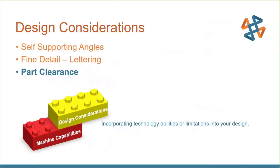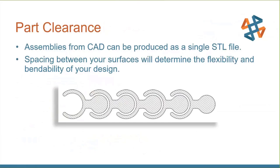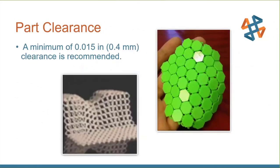For part clearance, it's always subject to your design and depends on how much flexibility and bendability you want. I'll give you some minimums: 20 thousandths is often recommended, but I've found even 15 thousandths works well. You can see a chain mail example printed together at one time with about 15 thousandths clearance.